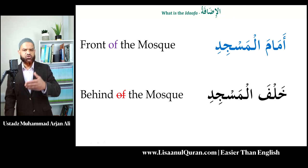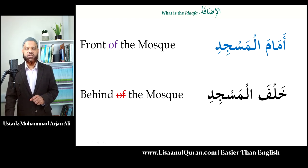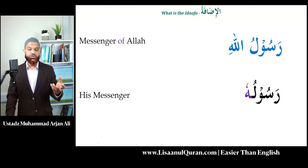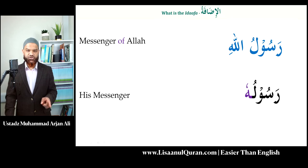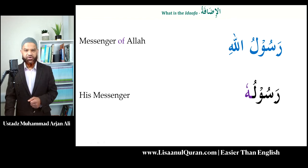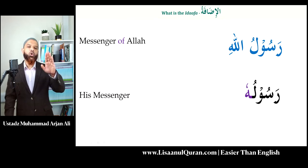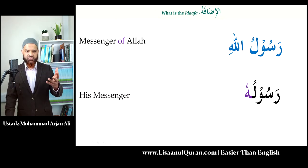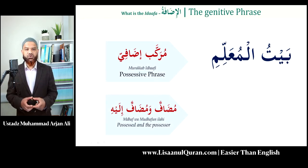The idafa can also be used to show relationship. For example, rasoolu allahi — 'the messenger of Allah' — uses a proper noun, while rasooluhu — 'his messenger' — uses a pronoun. In Arabic, both are idafa. One uses a pronoun and the other uses a proper noun, but the structure is exactly the same. You can use a pronoun, a proper noun, or any other type of noun as the construct allows.